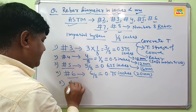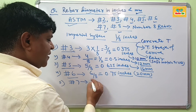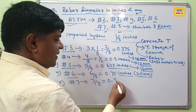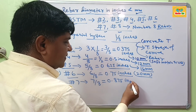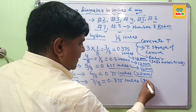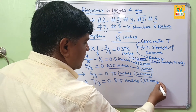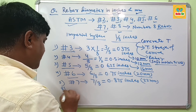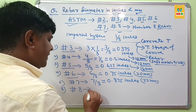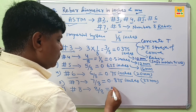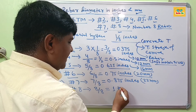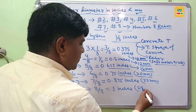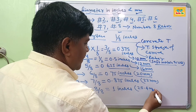For number 7 rebar: 7 divided by 8 equals 0.875 inches, which is approximately 22 mm in soft metric size. And for number 8 rebar: 8 divided by 8 equals 1 inch, which in millimeters equals 25.4 mm.